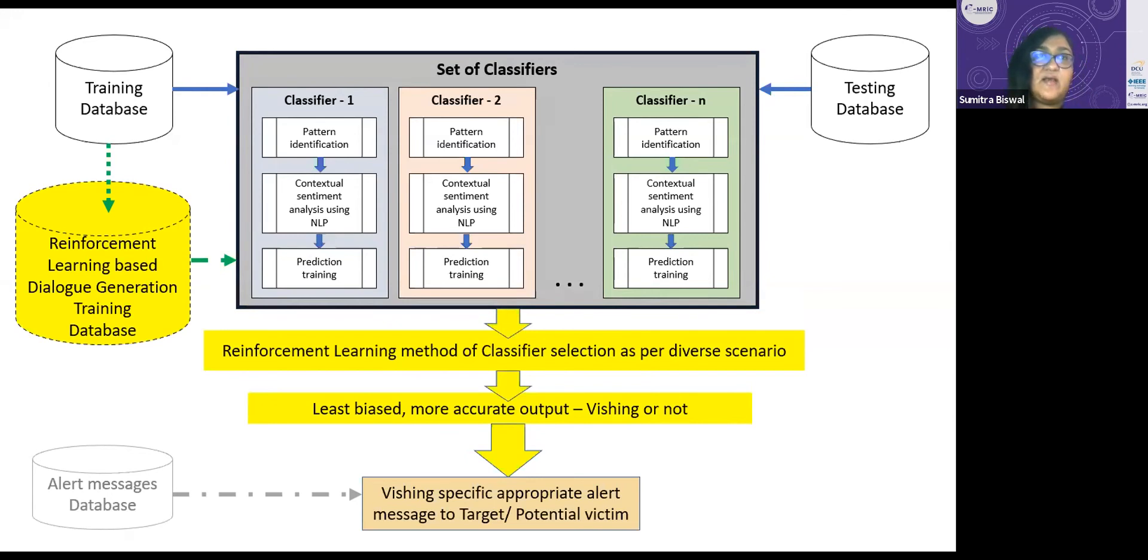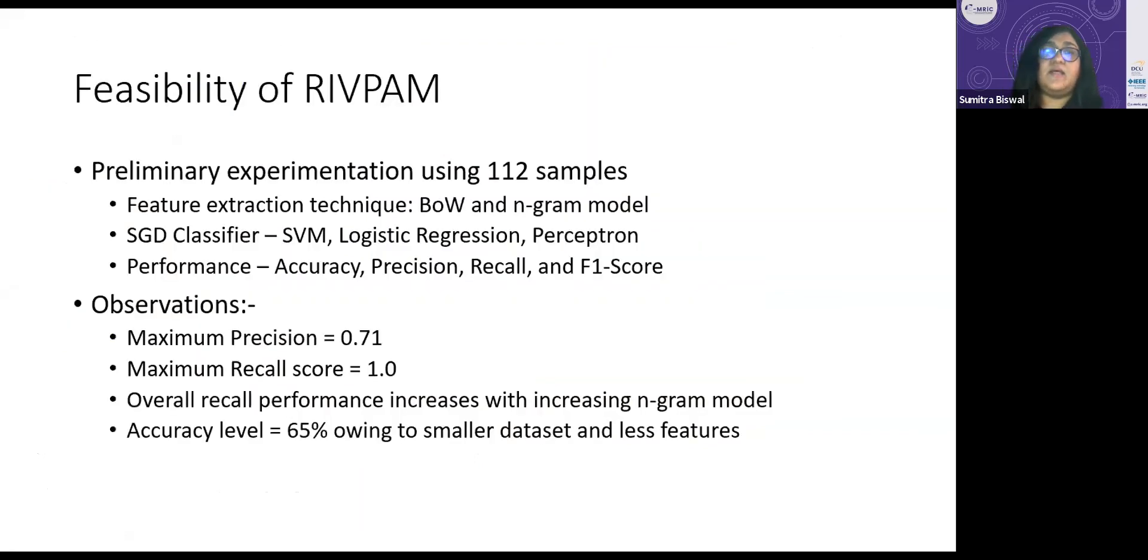Besides, as you can see, there is a reinforcement learning dialogue generation training database. We have observed that there is a very limited voice call dataset available to understand vishing and experiment with vishing. It's understood that there are conversational AI-based applications coming up with the help of reinforcement learning and its variants like deep reinforcement learning. Using such dialogue generations with various kinds of topics picked up from the training database, new sets of synthetic databases can be built to train RIVPAM in a more efficient way. So that way RIVPAM will evolve in future and it will become more accurate over time. Other than that, we have an alert messages database from which the actual message that needs to be prompted to the target can be picked, depending upon the type of vishing attack that has been predicted by RIVPAM.